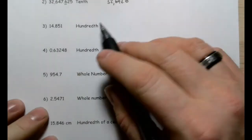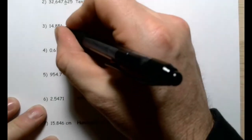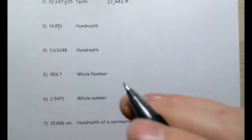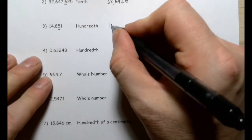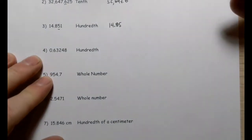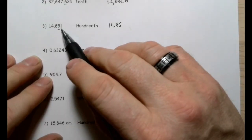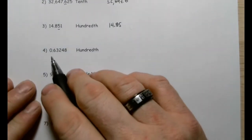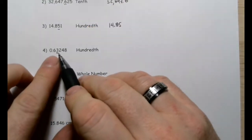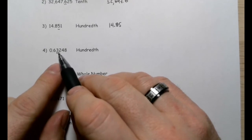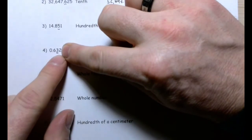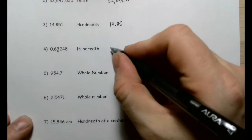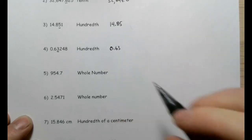Rounding to the nearest hundredth: the hundredth is two places to the right of the decimal — that's the five. The number to its right is one, which is in the zero-to-four range, so 14.851 rounds to 14.85. For the next number, hundredths again — two places right, that's the three. The number to its right is two, zero-to-four range, so 0.632 rounds to 0.63.